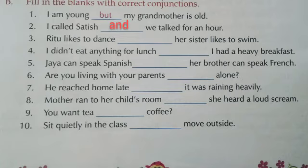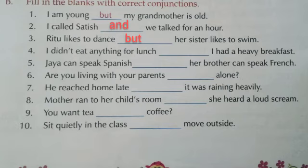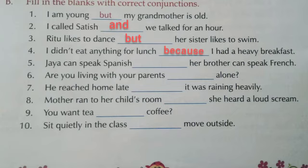Third question: Ritu likes to dance — her sister likes to swim. Here we need to join two sentences of opposite ideas, so the conjunction is 'but': Ritu likes to dance but her sister likes to swim. Fourth question: I didn't eat anything for lunch — I had a heavy breakfast. This sentence shows the reason, so the conjunction is 'because': I didn't eat anything for lunch because I had a heavy breakfast.